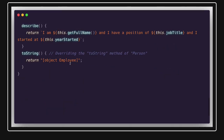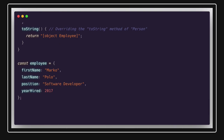You should also be aware of object destructuring. Given a simple object, you can destructure and get all values in a single line — firstName, lastName, and other properties — without writing multiple lines of code. ES6 also introduced Set, which stores only non-duplicate values, as well as WeakSet and WeakMap.